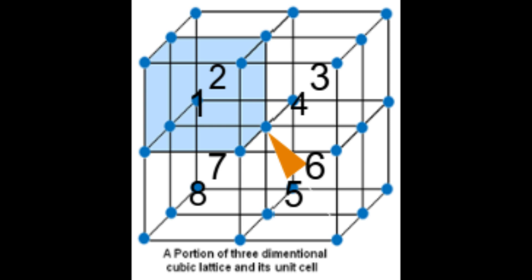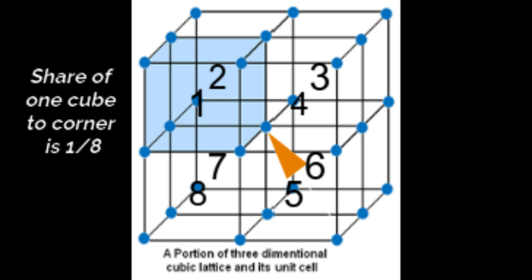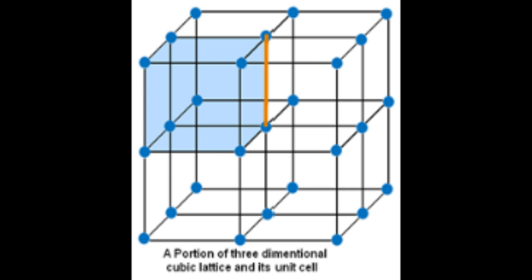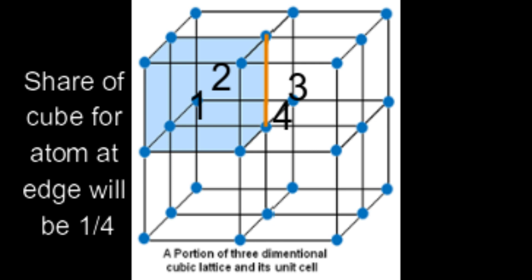Then what will be the share of 1 cube? The share of 1 cube will be 1/8th — meaning only 1/8th part of the complete atom will belong to 1 cube. Likewise, if you consider the edge of the cube, that edge can be shared by how many neighboring cubes? 4 cubes can share the edge. So if any atom is on the edge, it will be shared by 4 cubes, giving 1/4th atom per cube.